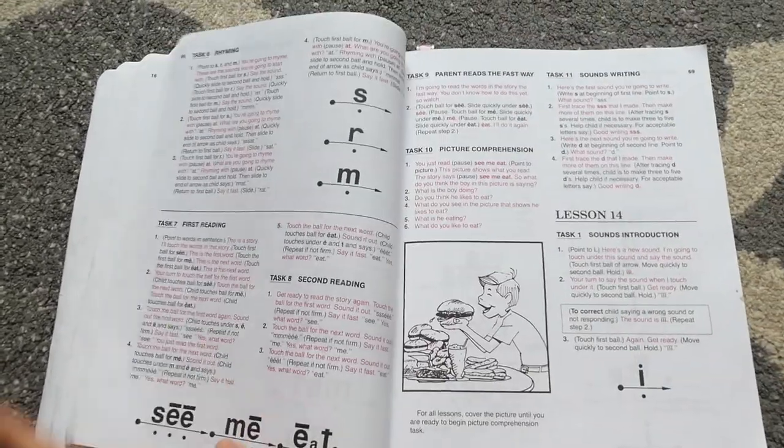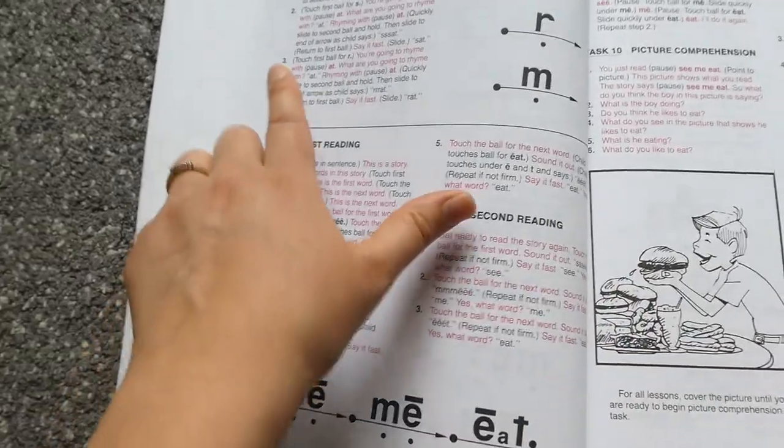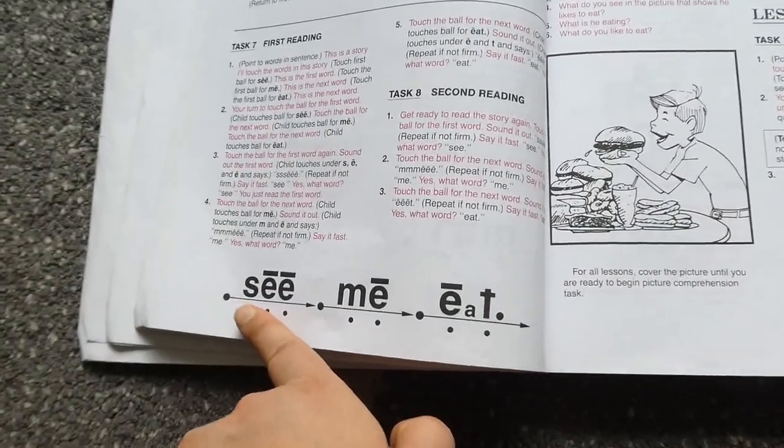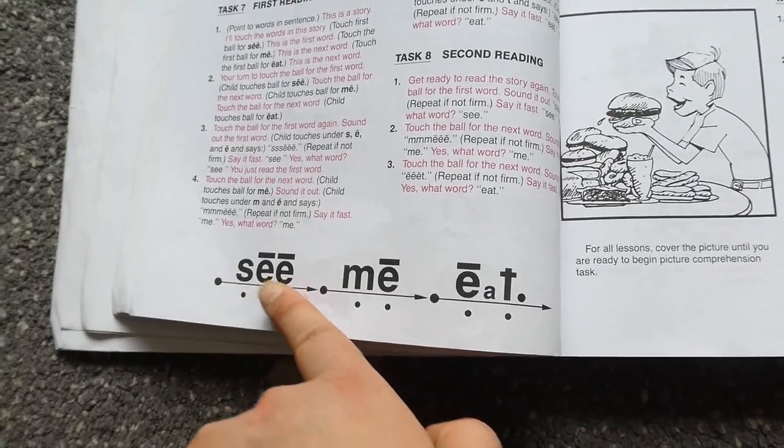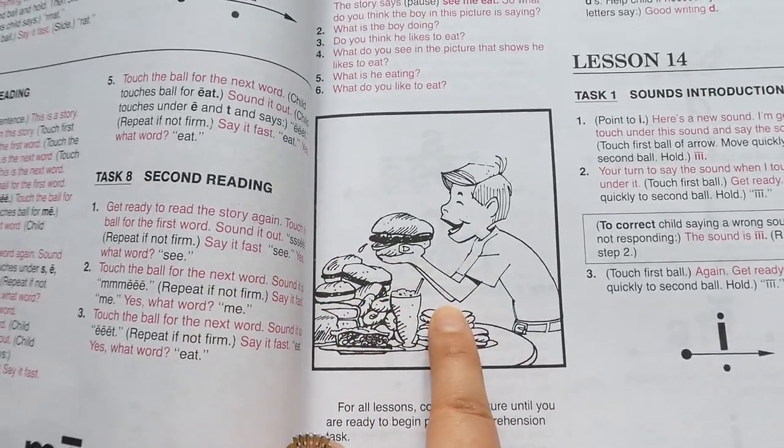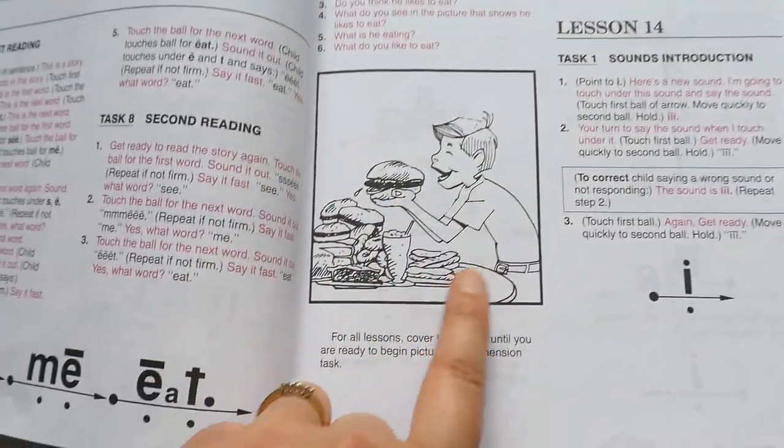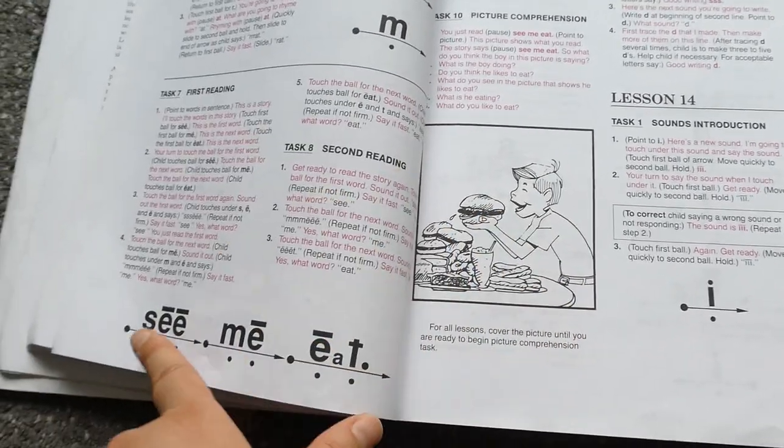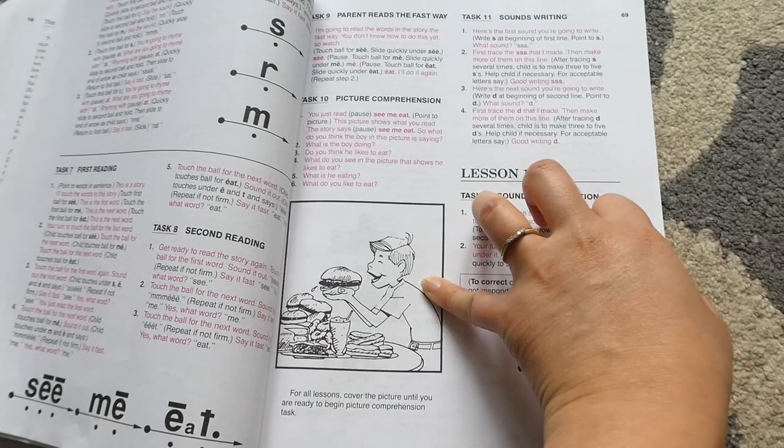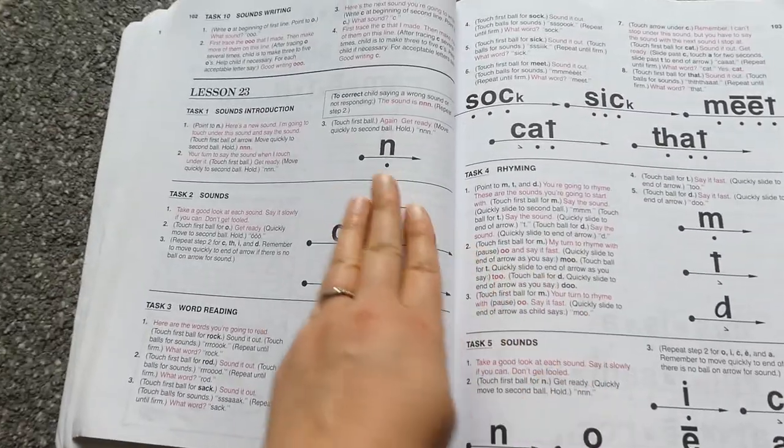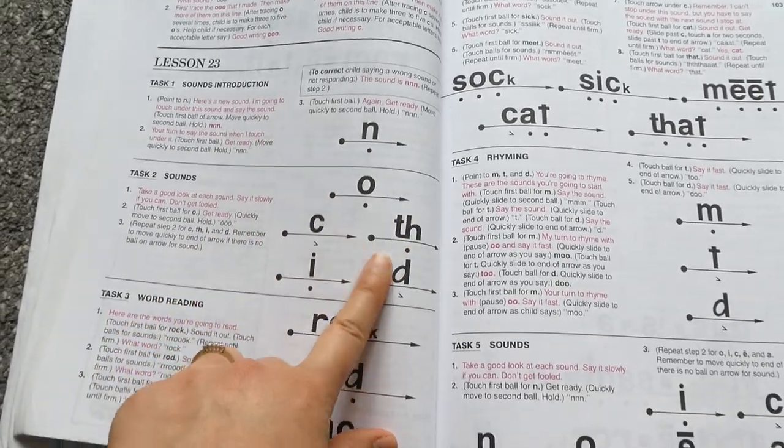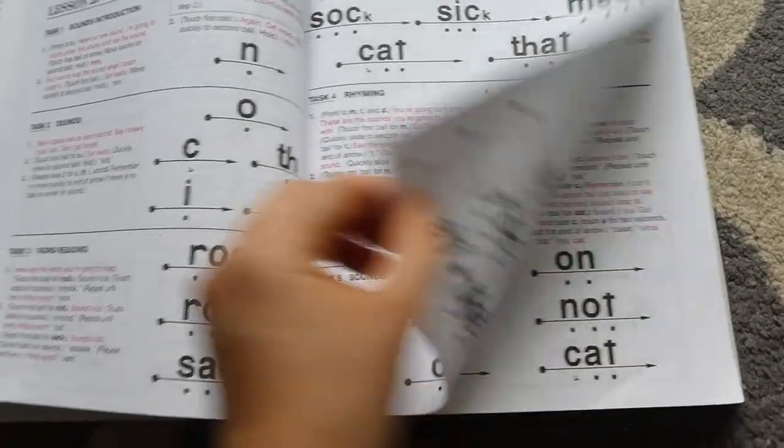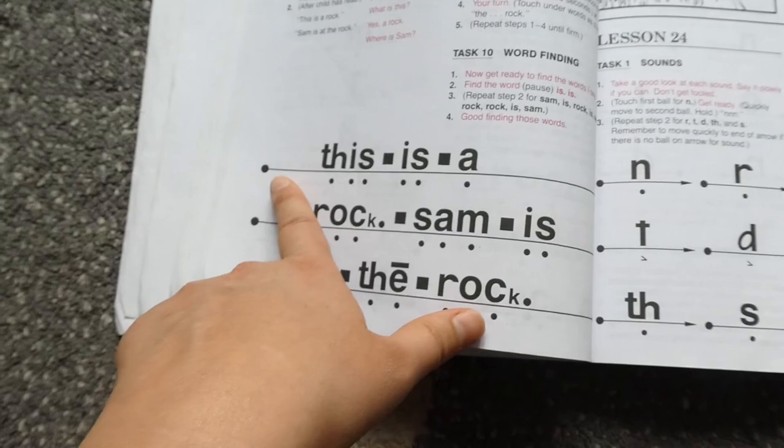You definitely don't want them to be tired of reading and not liking it. So then here, what lesson are we on now? We are on lesson 13. They start with their very first story. So there is their sentence. They're going to read, see me eat. And then you're going to see a picture and you can ask some questions along with the picture. Like, do you see what he's doing? Yes, he's eating. What is he eating? You can ask some questions and kind of correlate what they read with the picture they're seeing. Each lesson from here on out ends with a story.